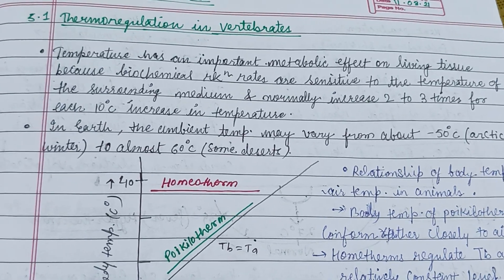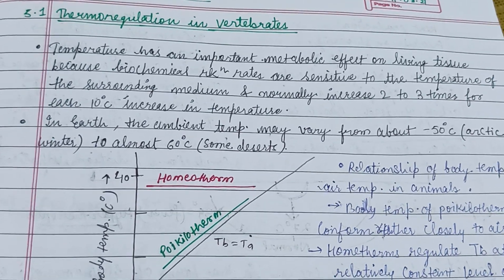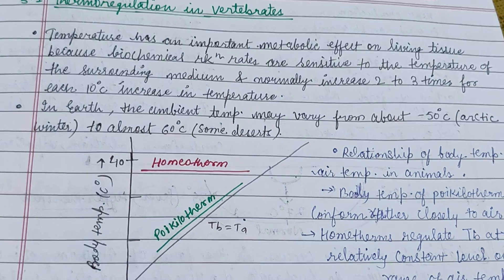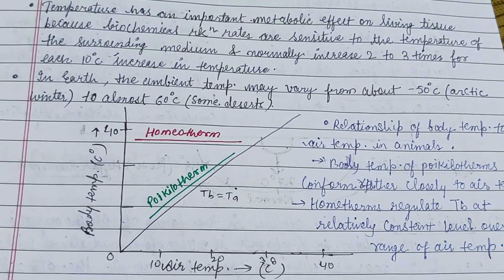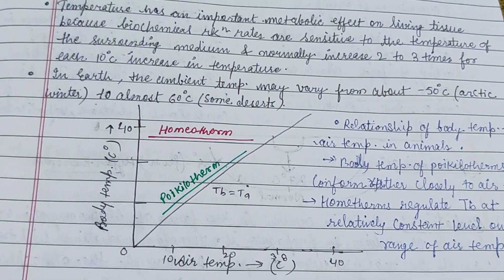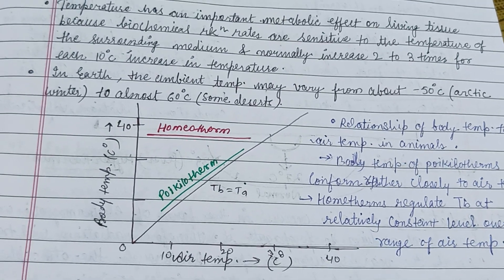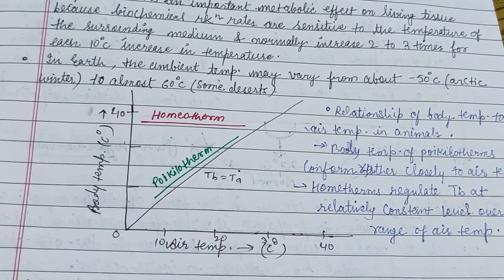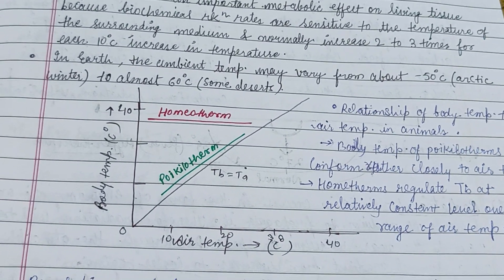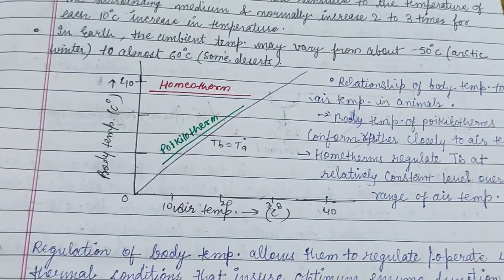Through this video we will discuss thermoregulation in vertebrates in detail. Temperature has an important metabolic effect on living tissues because biochemical reaction rates are sensitive to the temperature of the surrounding medium, and normally increase 2 to 3 times for each 10 degree centigrade increase in temperature.